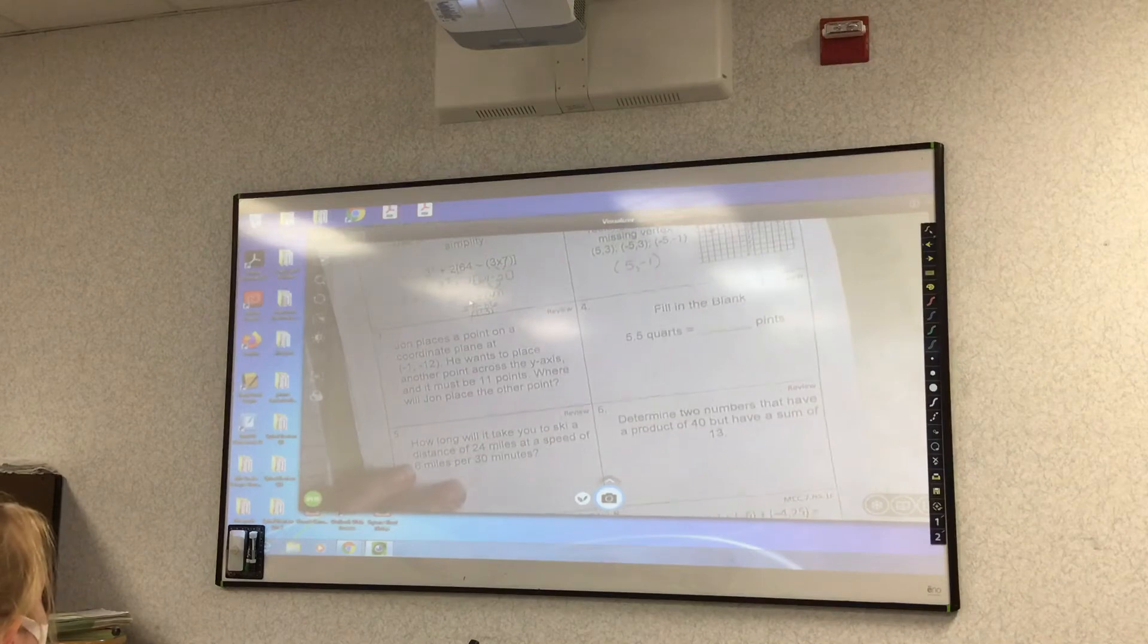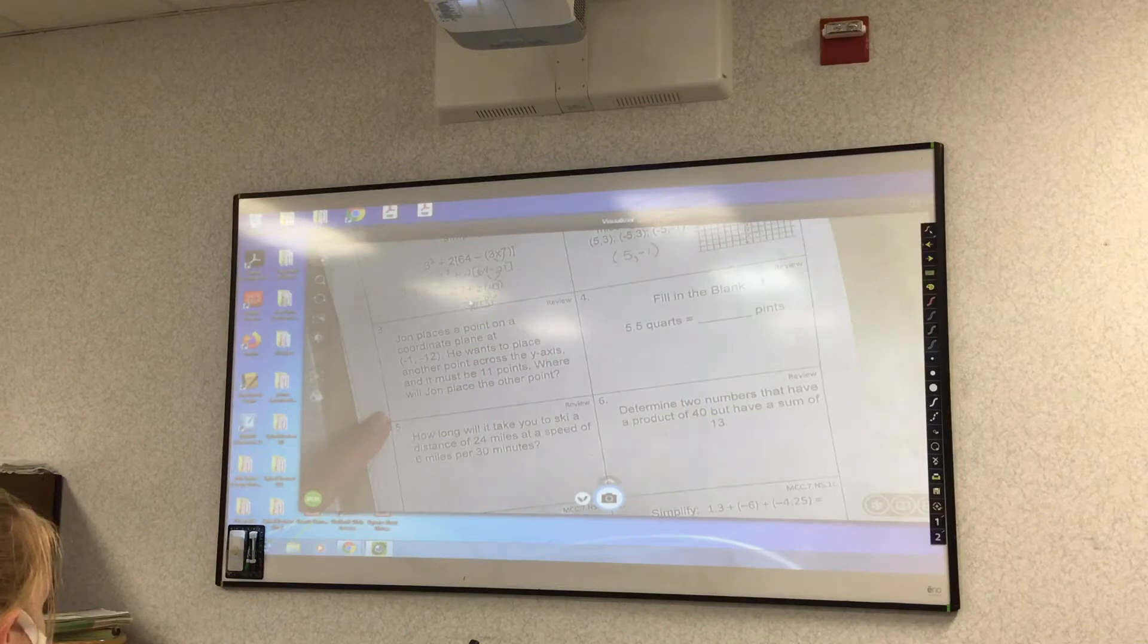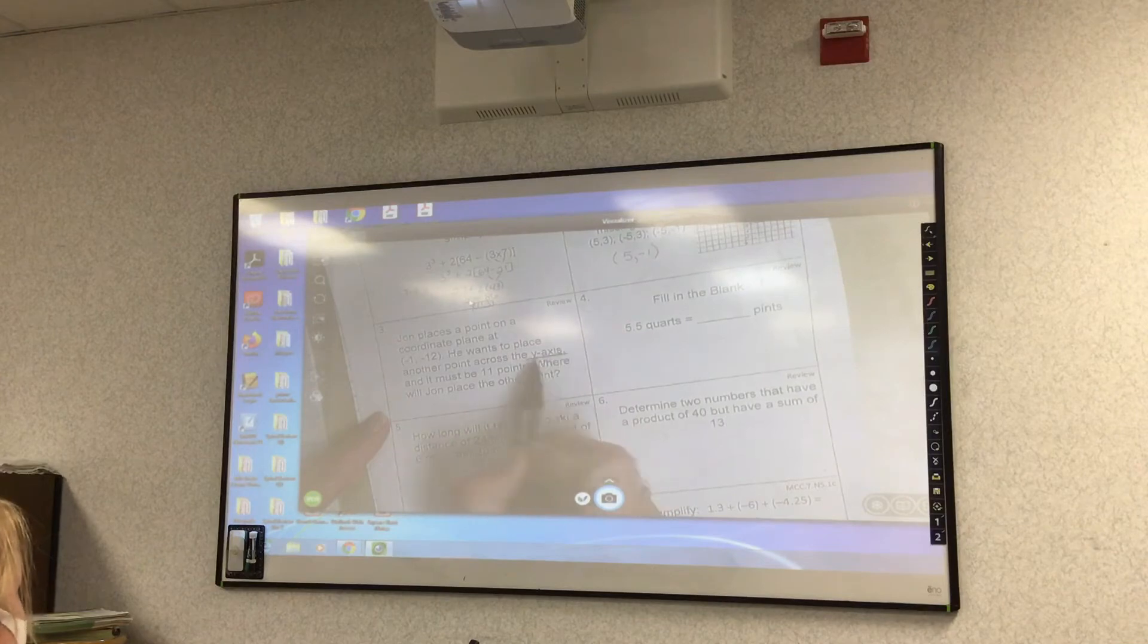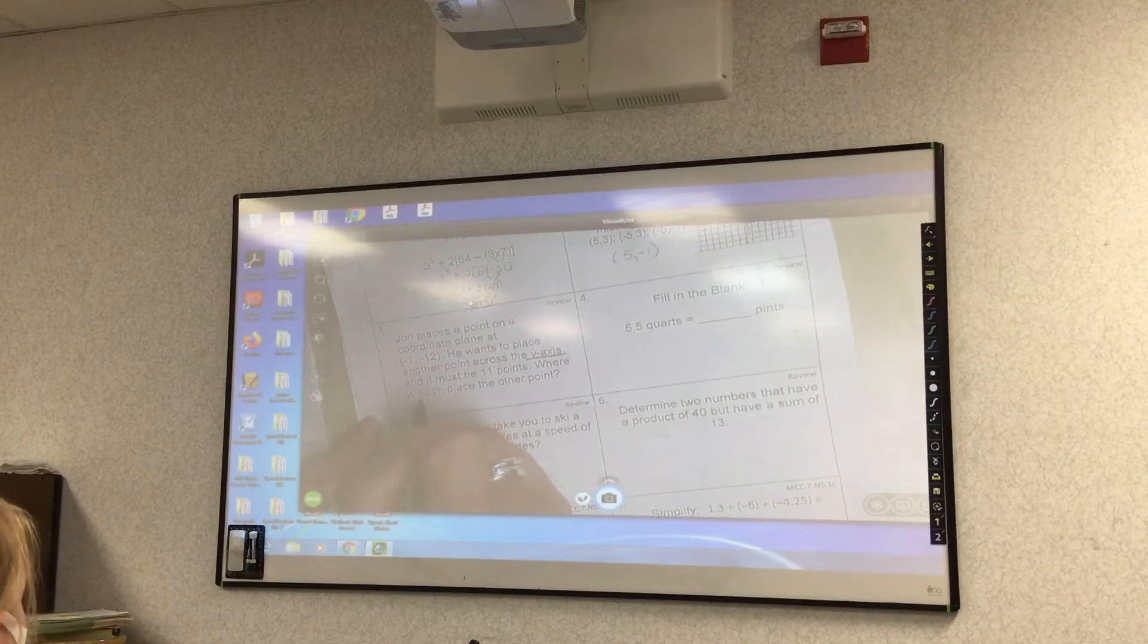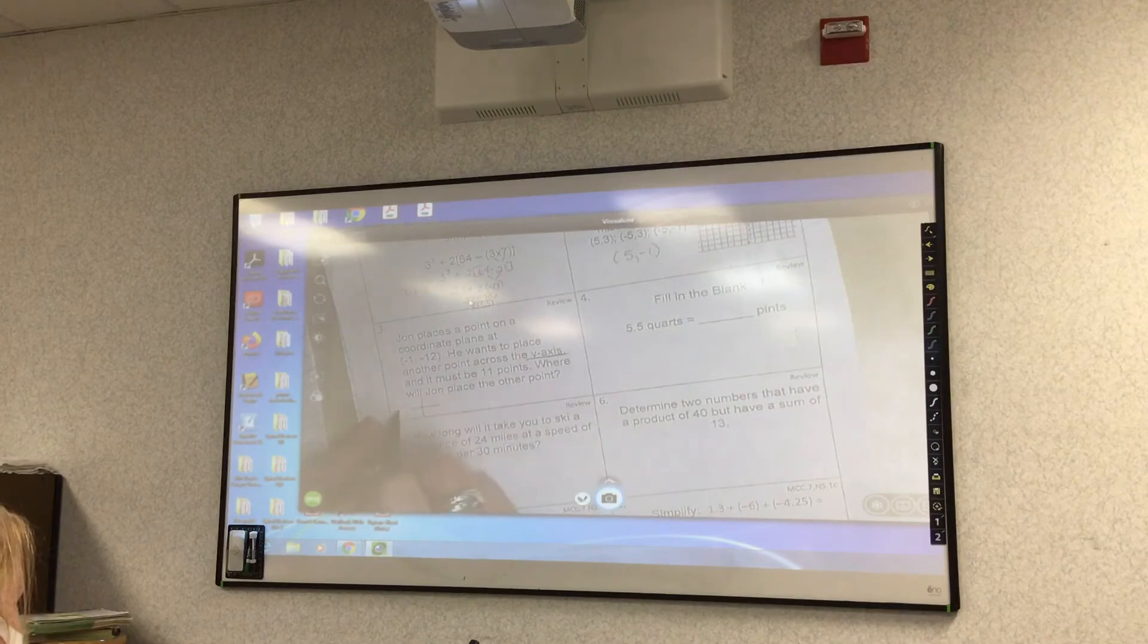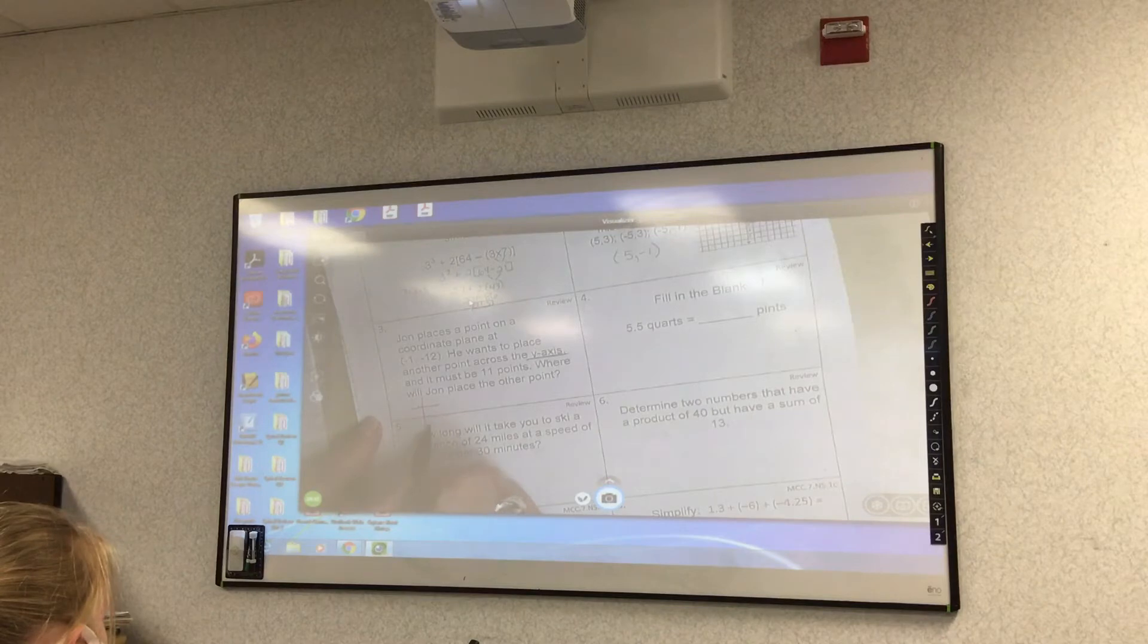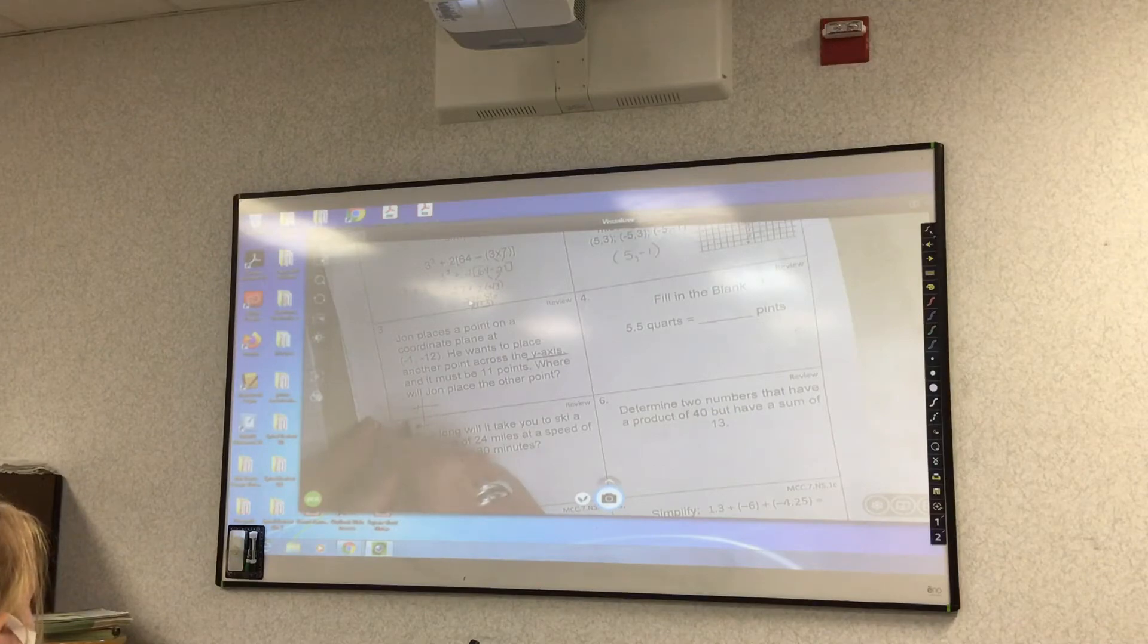John places a point on a coordinate plane at negative one, negative 12. He wants to place another point across the y-axis, and it must be 11 points. Where will John place the other point? That's very important, and it has to be across the y-axis. This one, I draw my little graph down here, and because there's not that much room, I can't make it very big. So it goes negative one, and I'm just going to say down here. I can get down here, and that's a negative 12. Okay, so here's my dot. So it's negative one, negative 12.